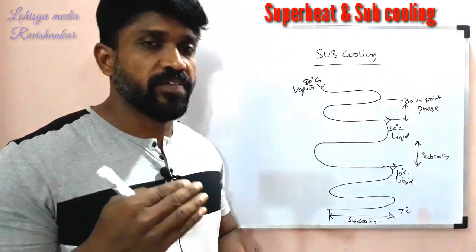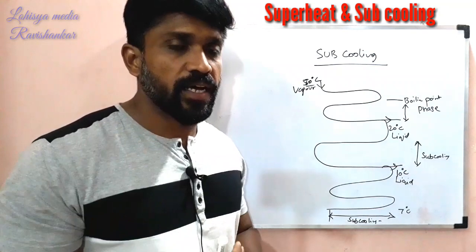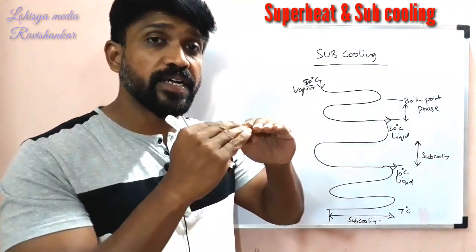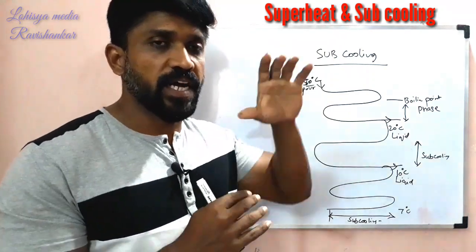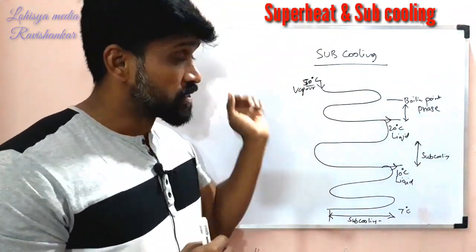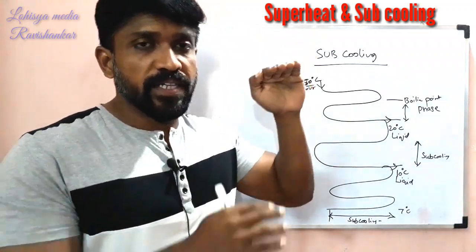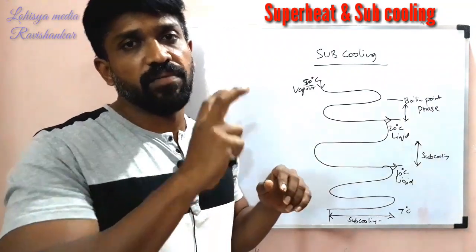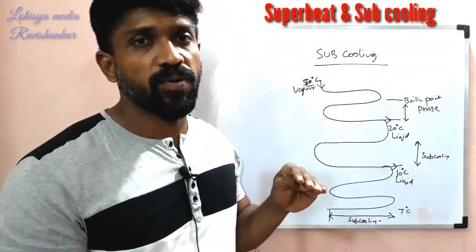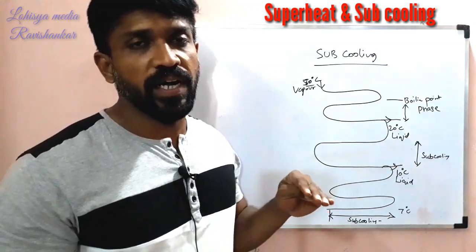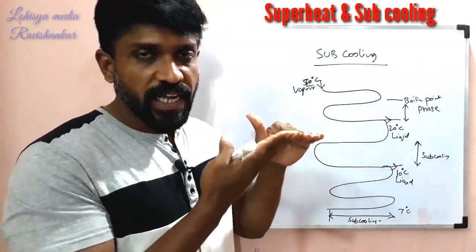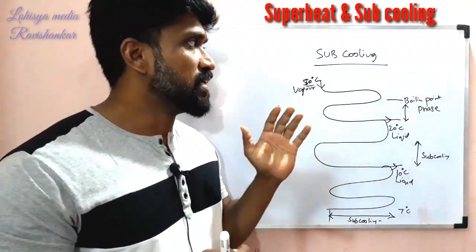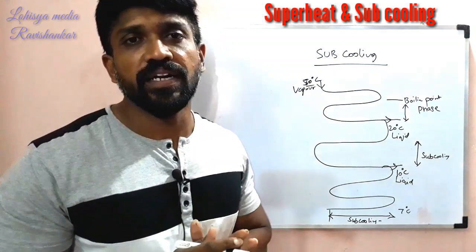Superheating is about the vapor phase — beyond the boiling point, it is hot heat. That phase is Superheat. Sub-Cooling is about the liquid phase — it is cooled below the boiling point, below the freezing point side. That is Sub-Cooling. This is Superheating and Sub-Cooling.